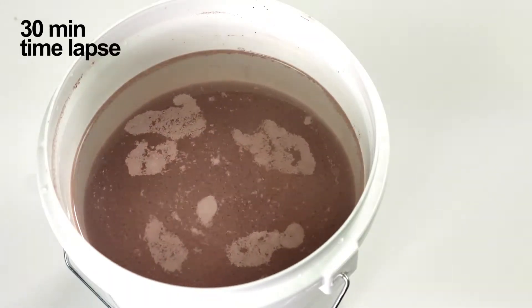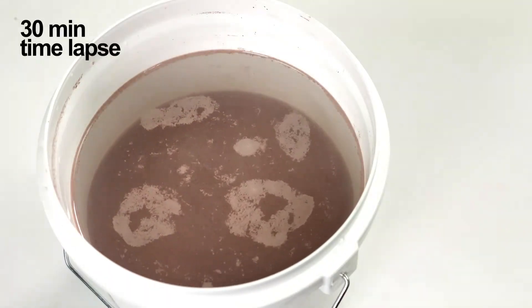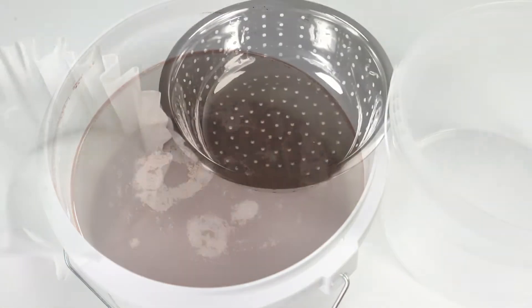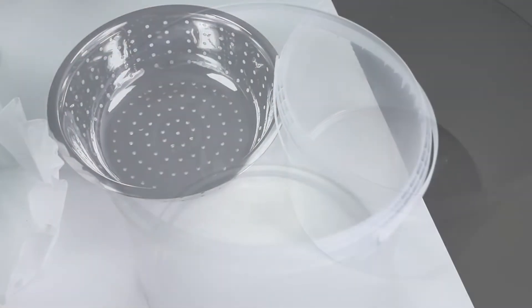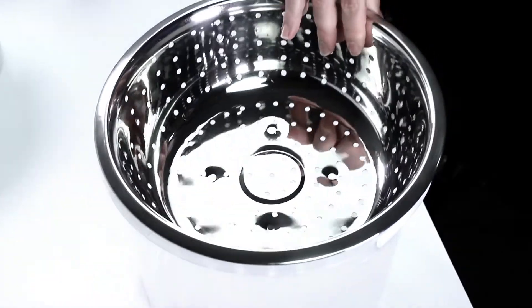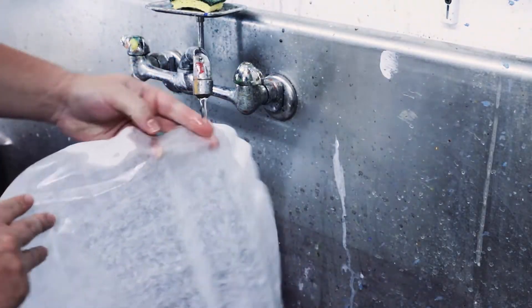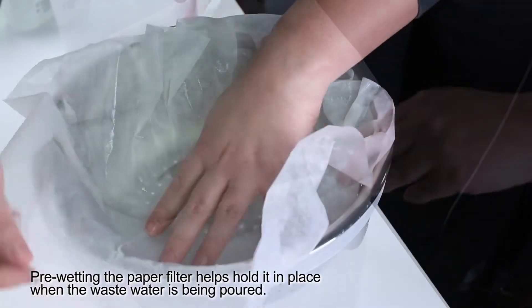While the mixture is separating, prepare for the next step by placing the colander into the large clear bucket. Then gently wet and place the paper filter into the colander.